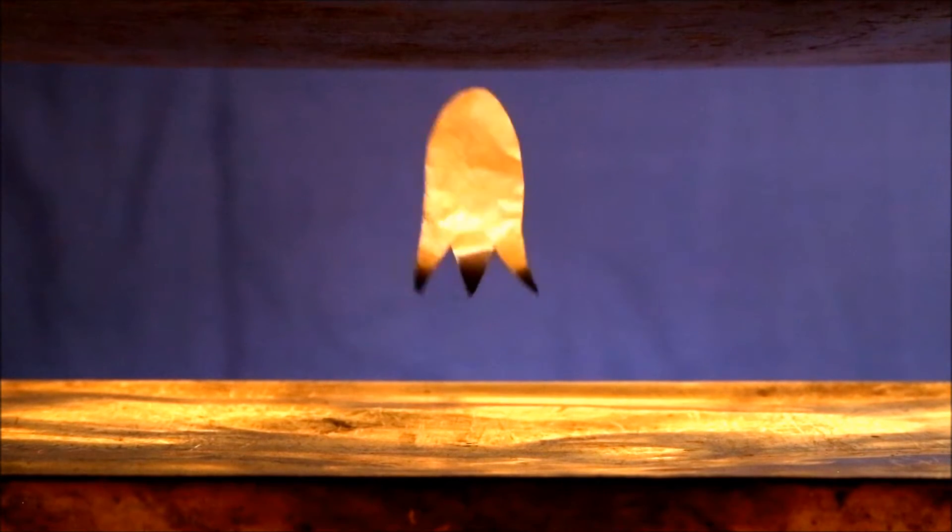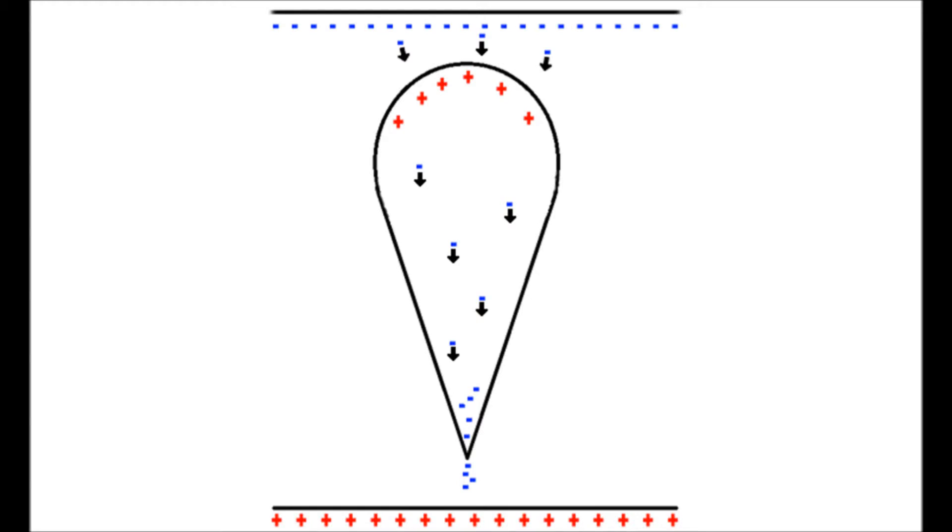Here's how it works. The strong negative field of the upper plate forces electrons downward towards the bottom of the object to be levitated. Because the bottom is pointed, these electrons can escape due to corona discharge.